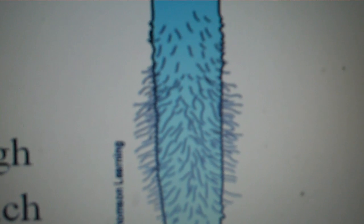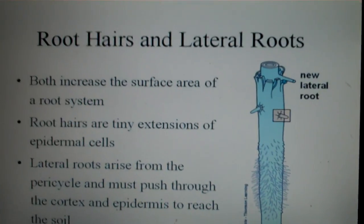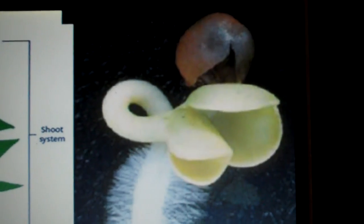Then root hairs are a little bit smaller, and those are extensions of the epidermal cells of the dermis. Now these root hairs only last for a couple days at a time. This is a germinating seed. You can see the root hairs or the little fuzz coming off of the developing root.